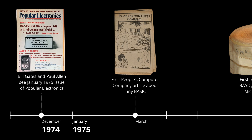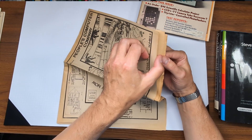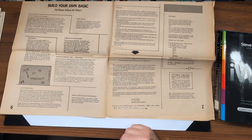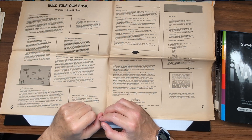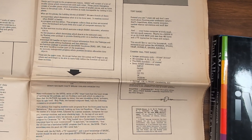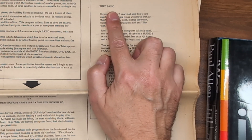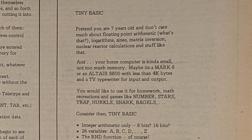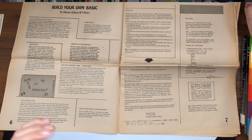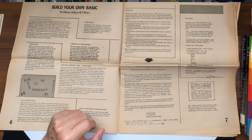And things were moving fast. The very next PCC newsletter issue, in March of 1975, kicked off a series called Build Your Own BASIC. They weren't just talking about it — they were showing people how to make BASIC for machines using the Intel 8080 chips. And they introduced a concept crucial for the limited hardware of the day: Tiny BASIC. The newsletter put it charmingly: 'Pretend you are seven years old and don't care much about floating-point arithmetic. Your home computer is kind of small. Not too much memory. Maybe it's a Mark 8 or an Altair 8800 with less than 4K bytes and a TV typewriter for input and output.' Tiny BASIC was about making programming accessible on minimal hardware. Keep that in mind — it'll become important later.